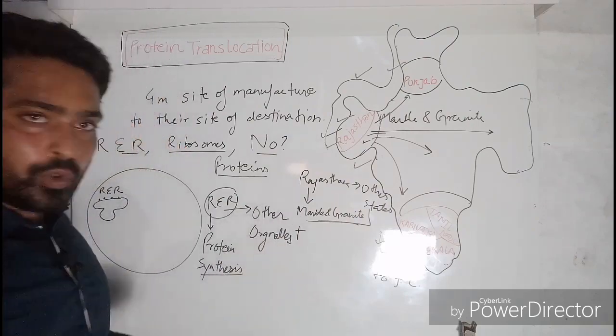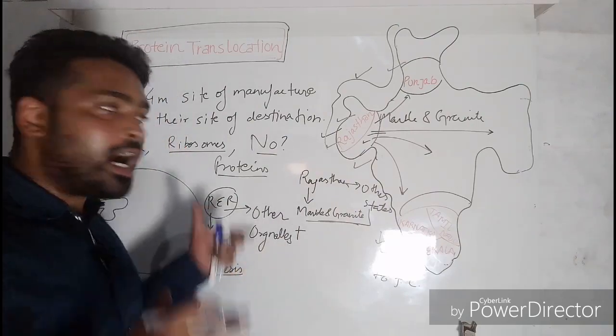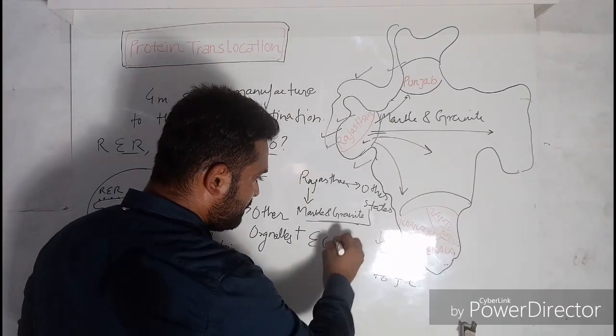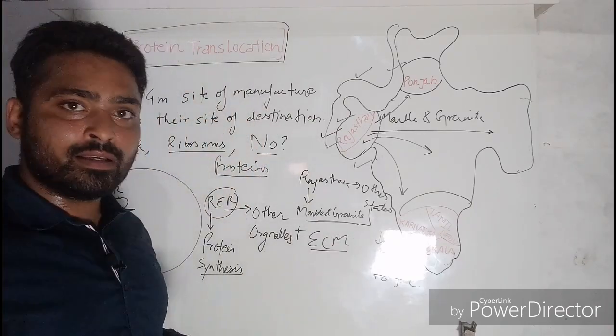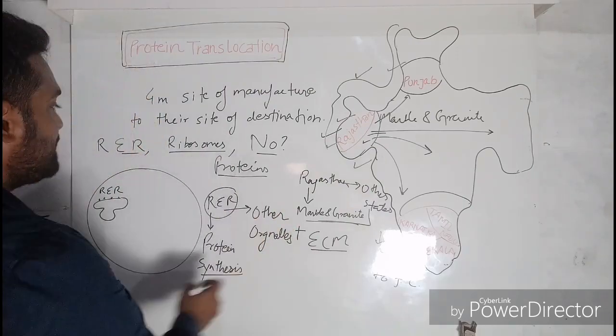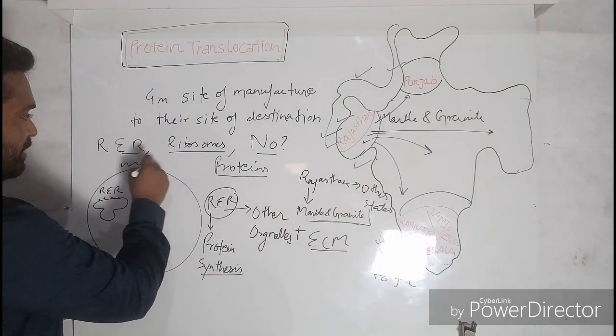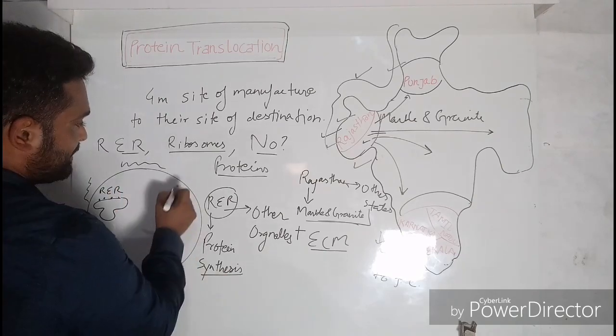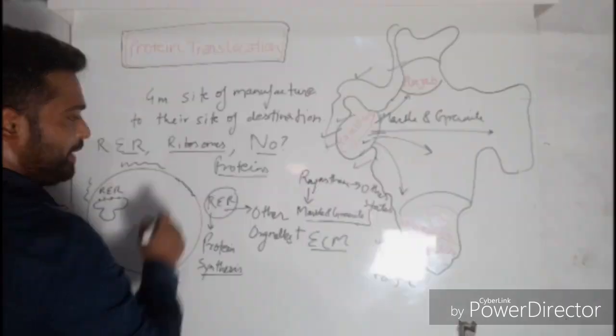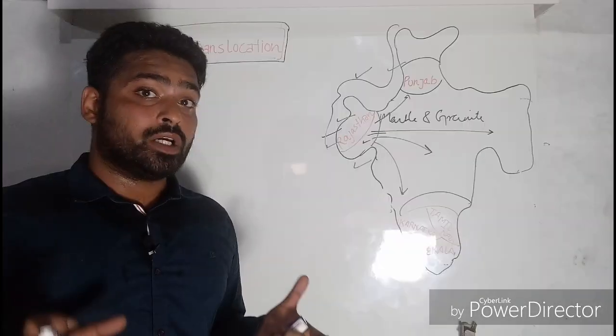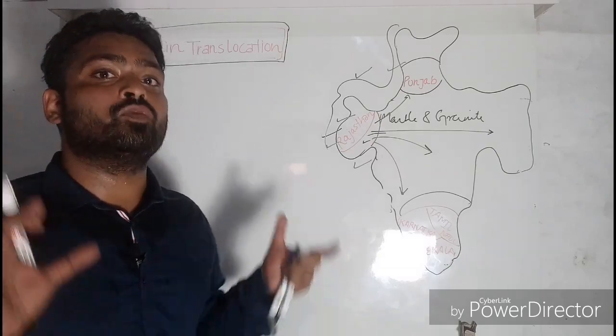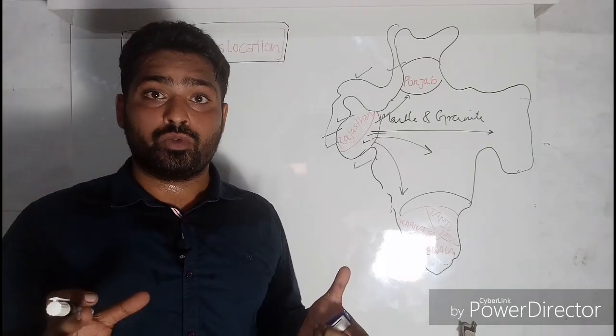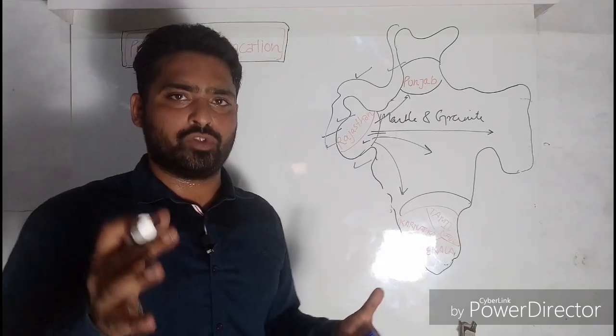Here, the proteins are exported out of the cell to ECM, that is the extracellular matrix, the material which is present outside the cell. And also these proteins are inserted in the plasma membrane. Now there is a need to understand one more concept because this is important when we will be discussing the transport of these proteins to cellular organelles in detail in future videos.